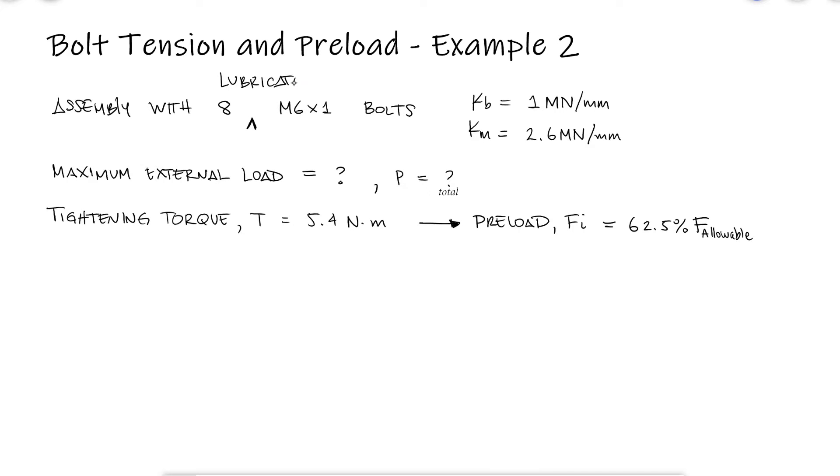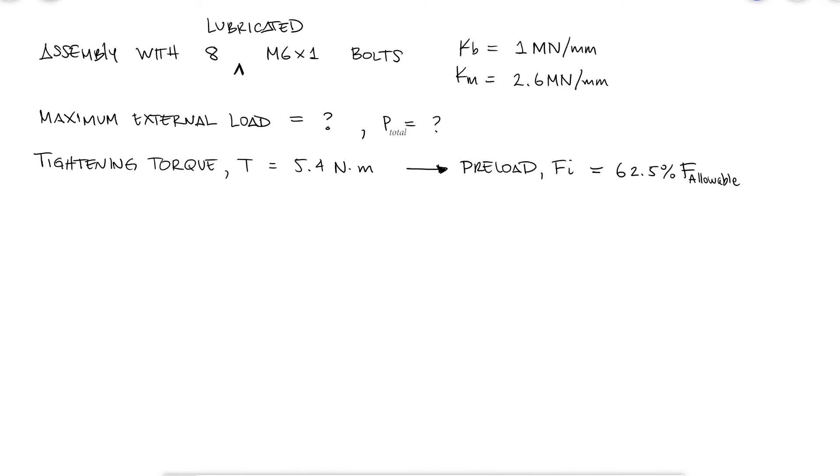If the assembly is bolted with 8 bolts, the external load that will affect each bolt will be the total external load divided by 8, which means that the total external load is 8 times the load that affects each bolt.